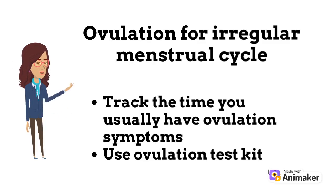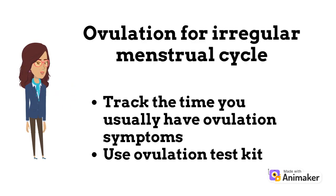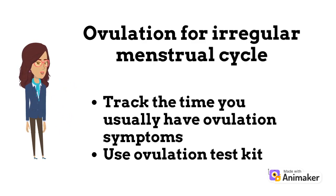For an irregular cycle, you have to put in effort at determining your most fertile days. Firstly, track the time you usually have ovulation symptoms for a number of months to know when you usually ovulate. Check for my video which talked on ovulation. Secondly, use an ovulation test kit for a couple of months and chart it down. This will help you know when you ovulate.